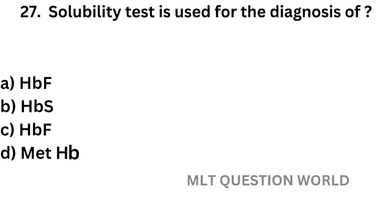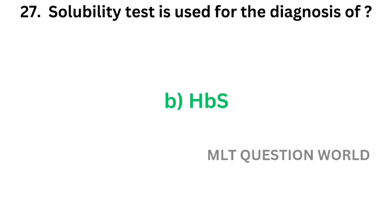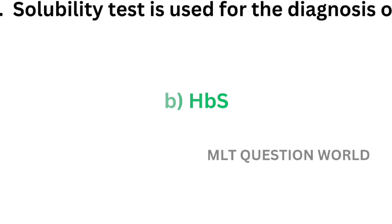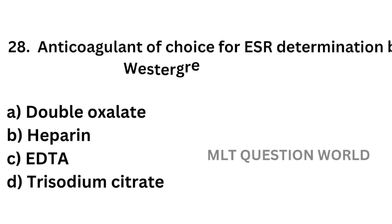Question number 27 (solubility test). Solubility test is used for the diagnosis of: Option A, fetal hemoglobin; Option B, sulfhemoglobin; Option C, methemoglobin. The correct answer is Option B, sulfhemoglobin. Solubility test is used for the diagnosis of sulfhemoglobin.